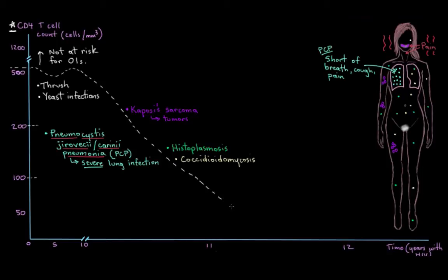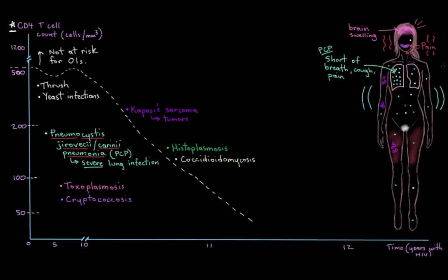Now, if your CD4 levels continue to fall to between 50 to 100 cells per cubic millimeter, you can start to develop opportunistic infections that affect your brain, such as toxoplasmosis and cryptococcosis. So toxoplasmosis is caused by a parasite, and it can cause encephalitis, which is swelling of the brain. And because of this swelling of the brain, or encephalitis, a person might develop neurological symptoms, like a headache, or weakness of their muscles, or seizures. These are all signs of a sick brain.